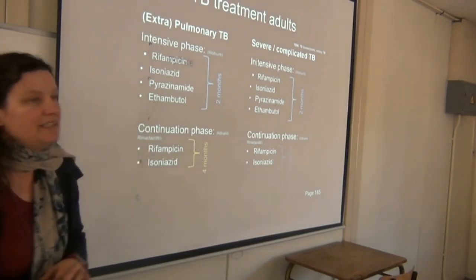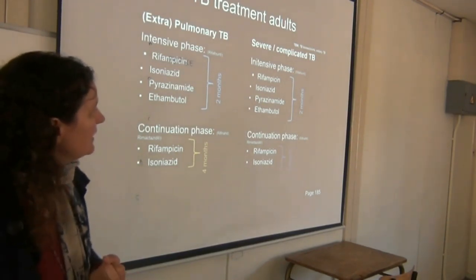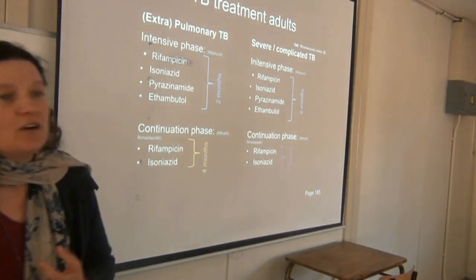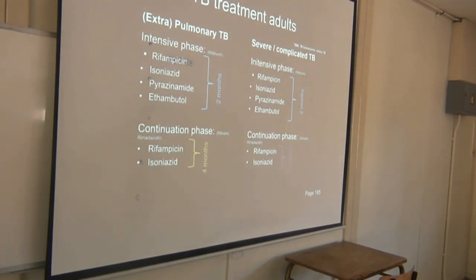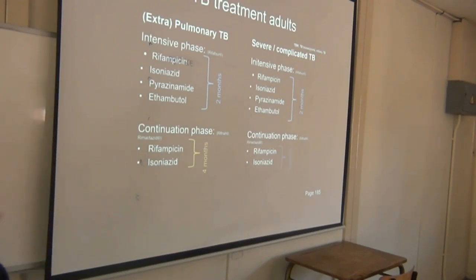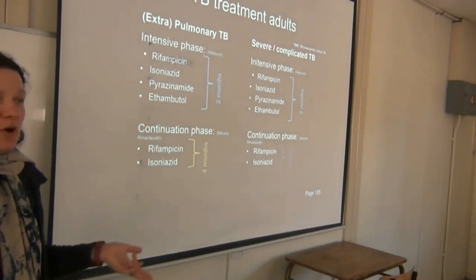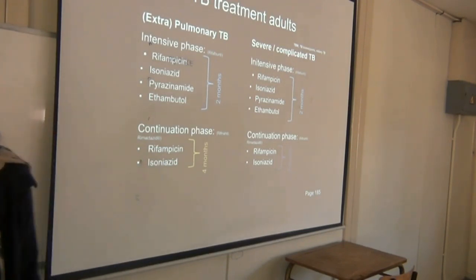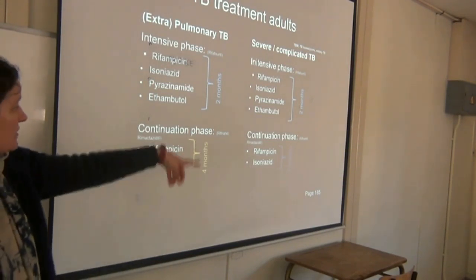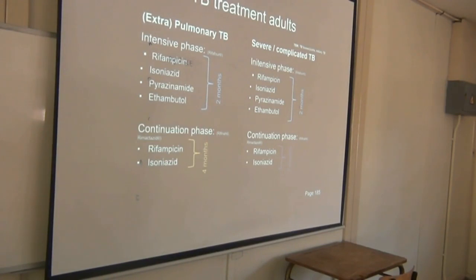Then you have severe or complicated TB — TB meningitis, TB bone, TB joints, or miliary TB. Miliary TB means TB is disseminated in the lungs with many small tubercles rather than one big one. The main difference for severe or complicated TB is the continuation phase: seven months of treatment versus four months for simple TB.